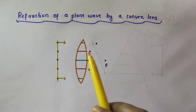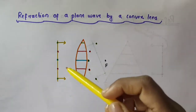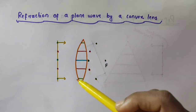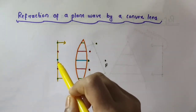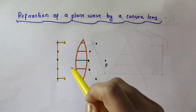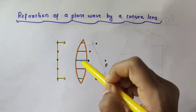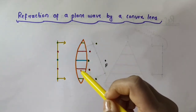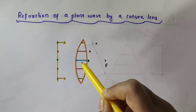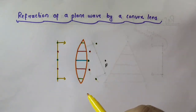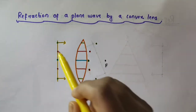Now let us see the refraction of a plane wave by a convex lens. Here we have a plane incident wave passing through a convex lens. The central part of the convex lens is thicker than its edges. So the central part of the incident wave has to travel through the thickest portion of the lens, and inside the lens the speed of light will be less. Therefore, the central part of the plane wave has to travel through the thickest portion with less speed, so it gets delayed the most while emerging out of the lens.